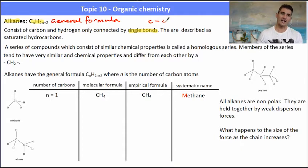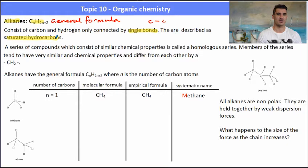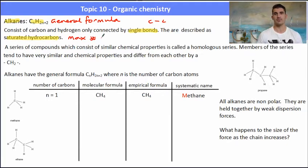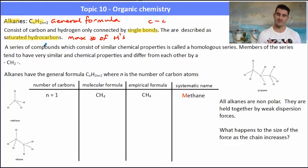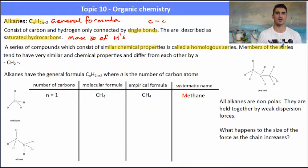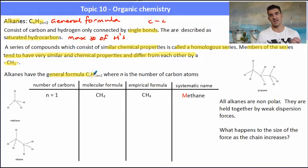Alkanes contain only carbon and hydrogen, connected by carbon-to-carbon single bonds. They're described as saturated because they contain the maximum number of carbon-hydrogen bonds possible. A series of compounds with similar chemical and physical properties is called a homologous series — a family of molecules. Members of this series tend to have very similar chemical and physical properties, and all they differ by is a CH₂ group.